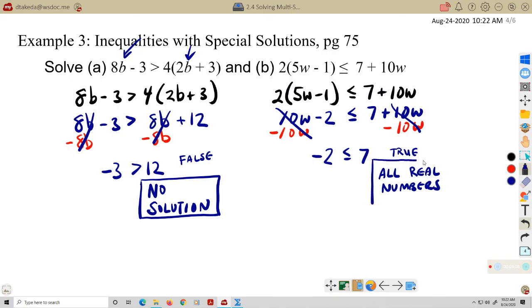And what does that mean? That means in the original inequality, I could put any value in for w on both sides and this will always be true. It doesn't matter. It will always be true.